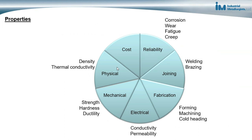When I talk about properties, many people focus on mechanical properties such as strength, hardness, and ductility. But there are different categories: mechanical, electrical, fabrication, joining, reliability, cost, and physical properties. For any application, we may be concerned with one, two, or several of these categories. It's especially important to consider ease of fabrication and joining — not just mechanical or electrical properties. We also have to think about reliability properties like corrosion, wear, fatigue, and creep to optimize performance at a reasonable cost.